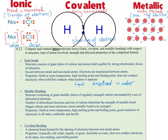Let's move to metallic bonding. Its structure consists of a giant metallic lattice of regularly arranged cations surrounded by a sea of delocalized electrons. The number of delocalized electrons and size of cations determine the strength of the metallic bond. In general, metallic bonding is always weaker than ionic bonding, but stronger than covalent bonding.